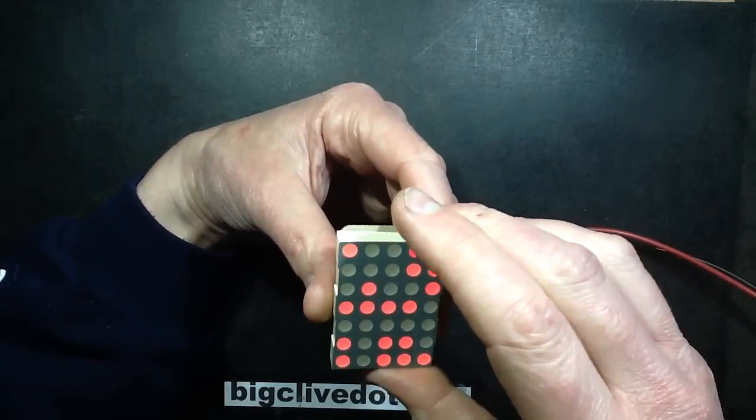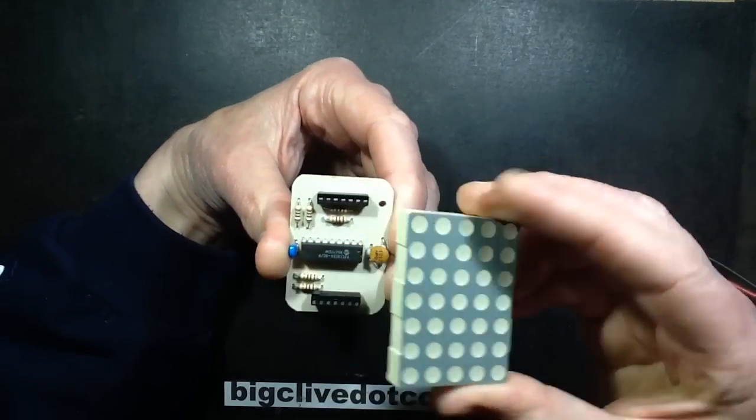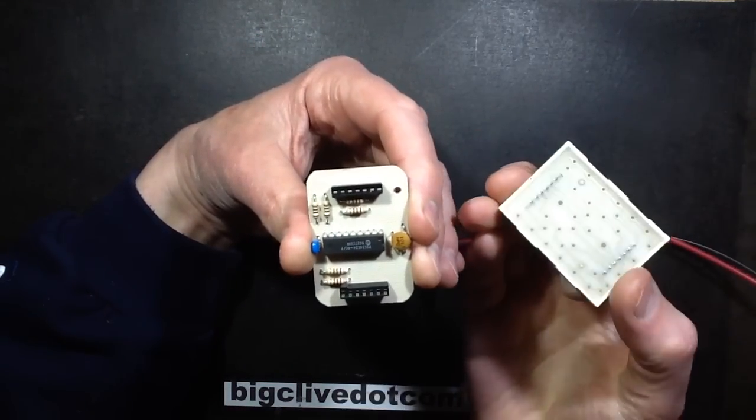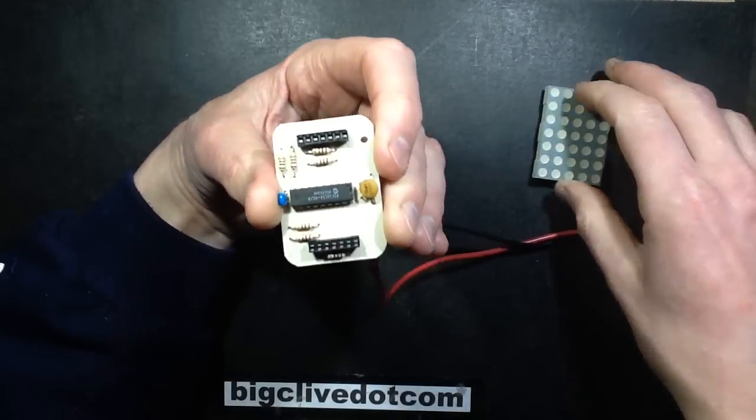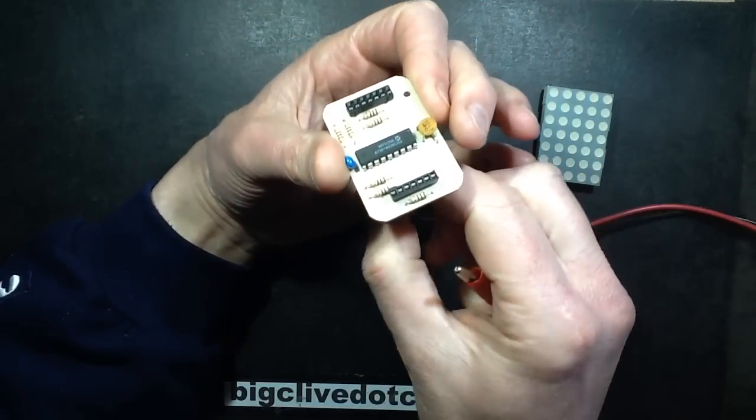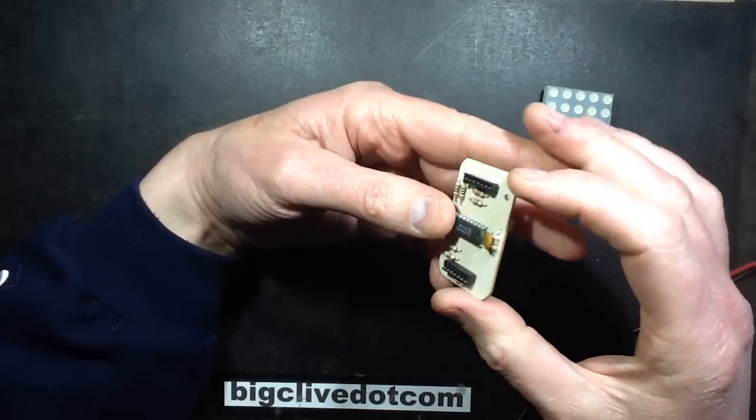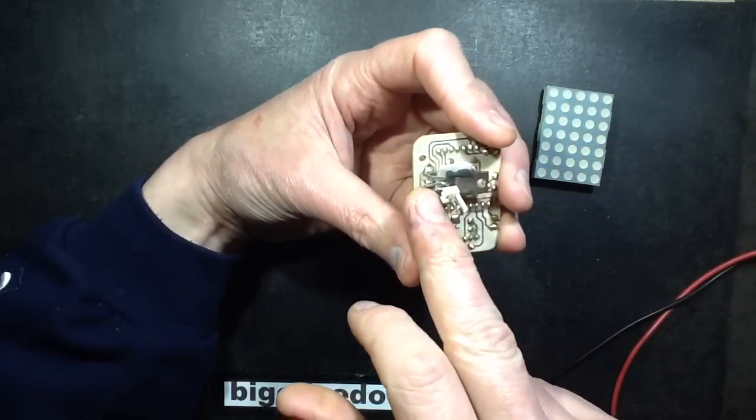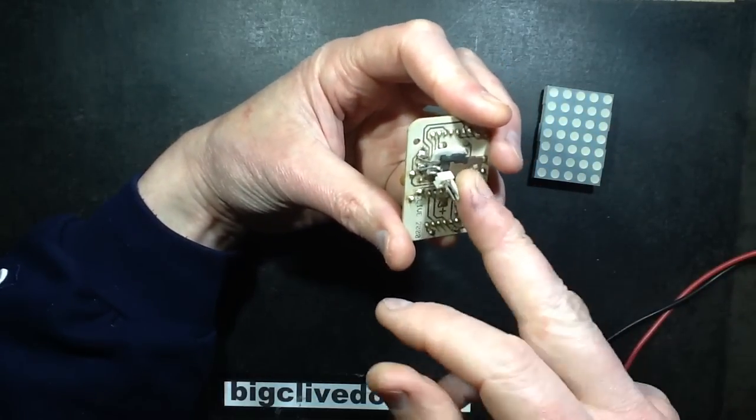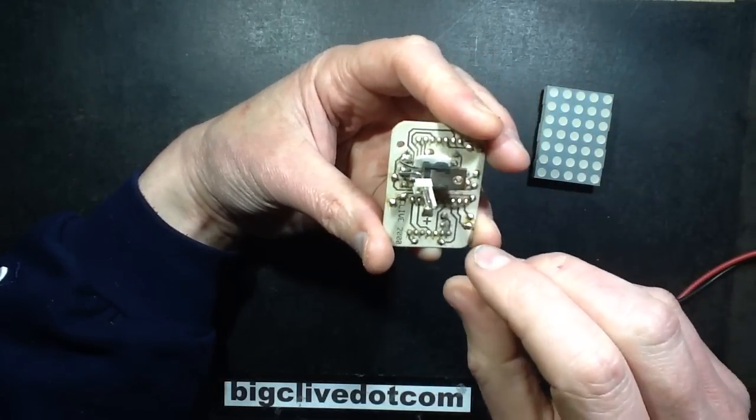So it's based on a Kingbright LED matrix display that just plugs onto it, standard display. And on the back I've tacked on, it was obviously designed to operate at 5 volts, but I've tacked on a voltage regulator so it could be run off a higher voltage supply.